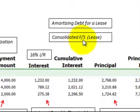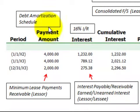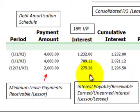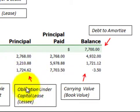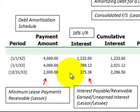For consolidated financial statements between a subsidiary and parent corporation on a lease, we'd use this debt amortization schedule. The payment amounts represent the minimum lease payments receivable by the lessor. The interest calculation covers interest payable, receivable, earned, and unearned interest for both the lessor and lessee. The principal amount represents the obligation under the capital lease for the lessee, and we have our carrying or book value as well. This debt amortization schedule is where we can pull most of our information for consolidation purposes.